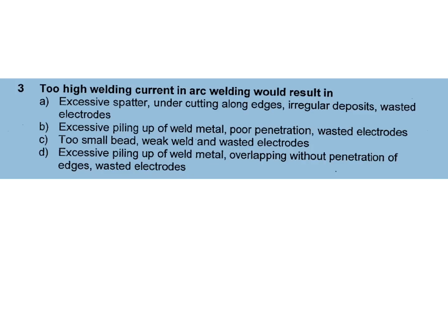Third question: Too high welding current in arc welding results in a) Burn through, b) Excessive sputter, c) Undercutting along edges, d) Irregular deposits, wasted electrodes. The answer is A, burn through. Where stuck also wasted electrodes, where stuck.